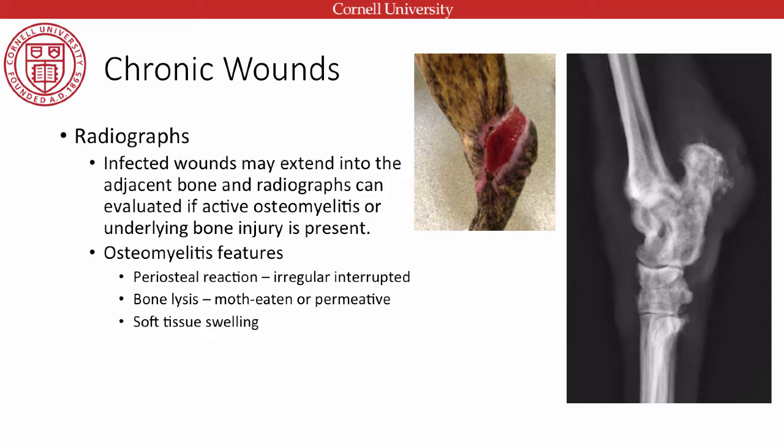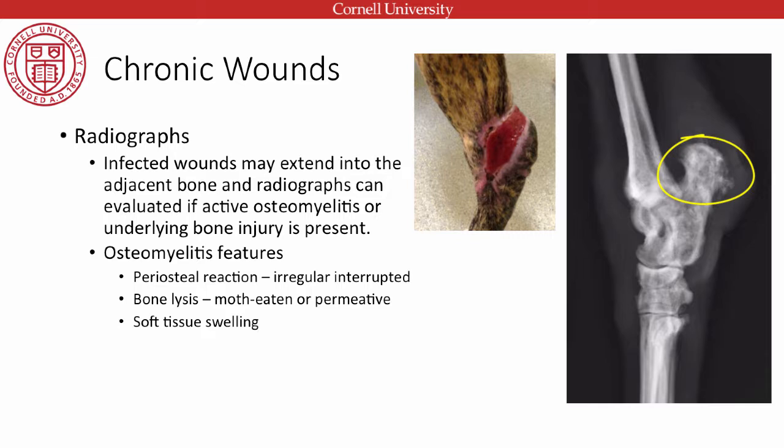Signs of osteomyelitis we look for include a periosteal reaction, often irregular and interrupted. In this example of calcaneal osteomyelitis, we can see lumps of spiculated new bone formation on the calcaneus, which also has a slightly lytic, moth-eaten appearance — that's due to bone lysis secondary to infection — along with localized soft tissue swelling. This dog has a wound right over the tarsus, resulting in underlying osteomyelitis, which will change our antibiotic choice.